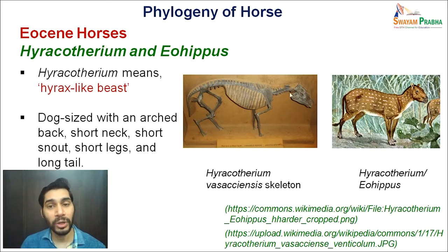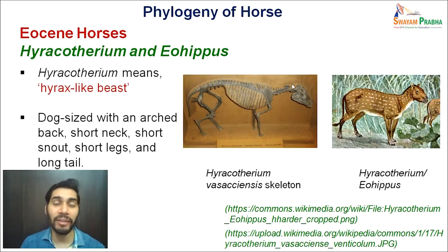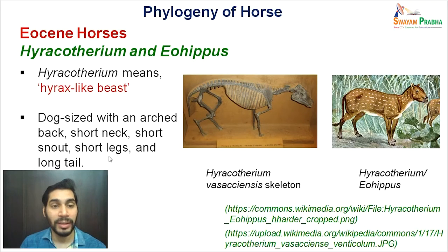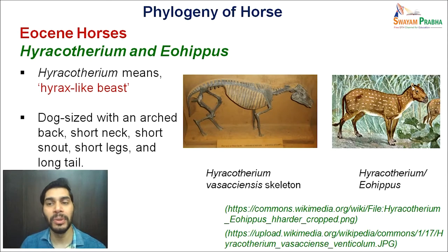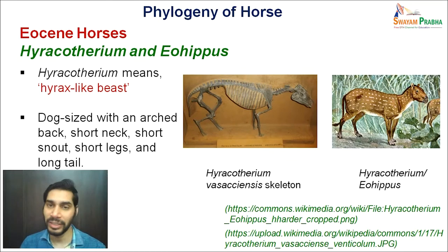The fossil suggests these organisms had a very short neck. The snout was also very short — if you see this snout area, it is very small. The legs were short, not like the height of a modern horse. They had short legs and a long tail. This is the fossil that paleontologists found, and based on these fossils, they have tried to imagine what the animal probably looked like in the Eocene epoch.